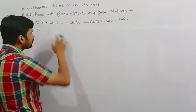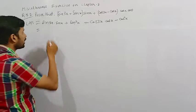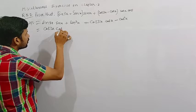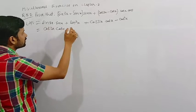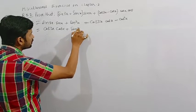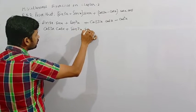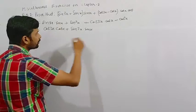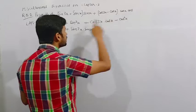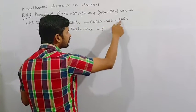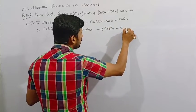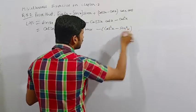Now write this term as first term and this one as second term. Write this because a plus b and b plus a both have the same meaning. So write cos 3x into cos x plus sin 3x into sin x. After that take minus common from these two terms. Then we have cos square x and then minus sin square x.